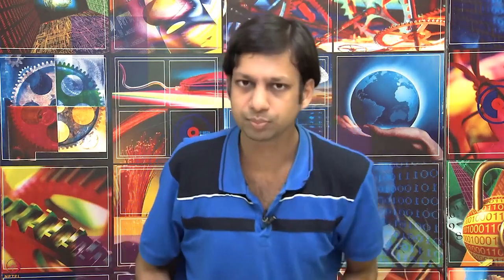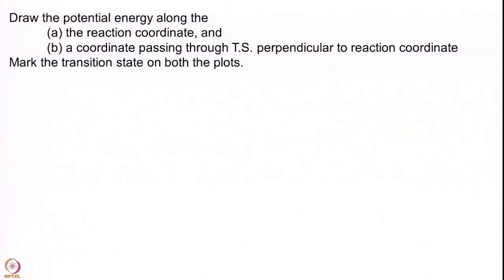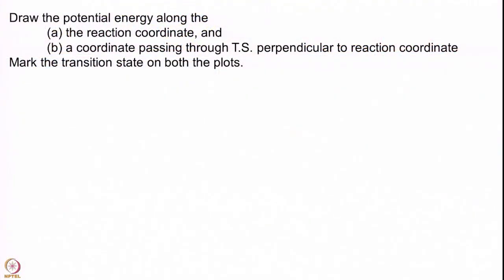The first problem is a relatively simpler but conceptually very important problem. I really wanted to take a pause — draw the potential energy along the reaction coordinate, and also along a coordinate that is perpendicular to the reaction coordinate sitting at the transition state. Please do take a pause and you should be able to do these plots.